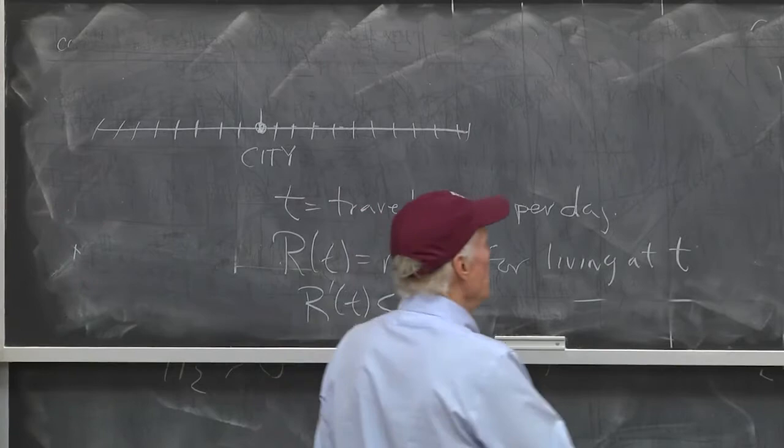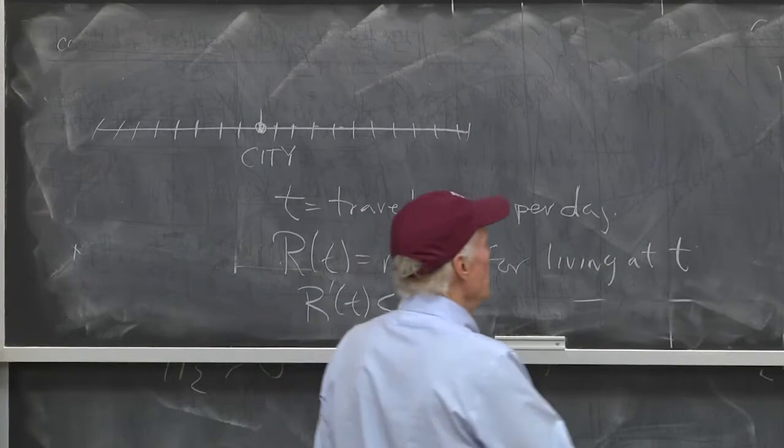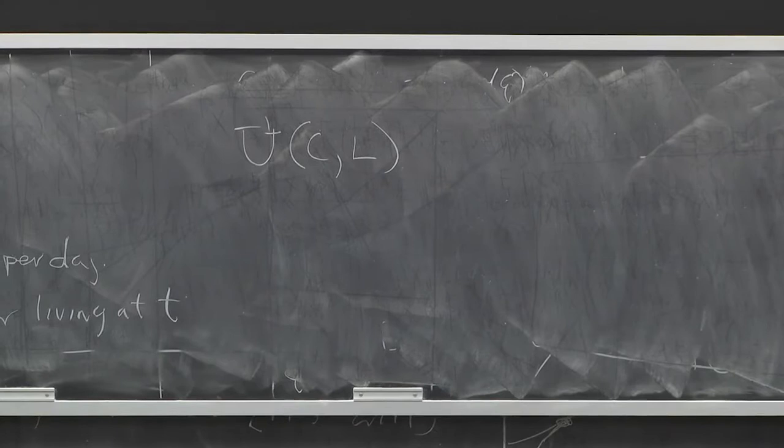I want to think about a very simple model. I want to think about a model where people care about two goods, consumption and leisure. The standard labor supply model economists use.